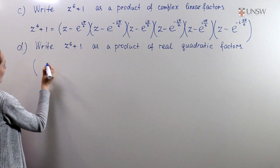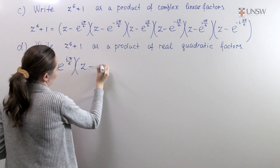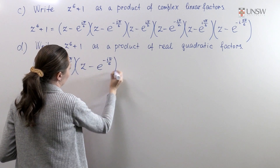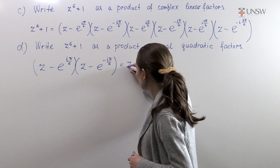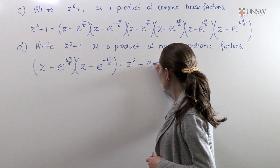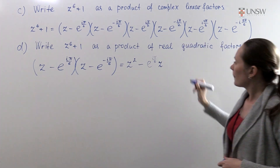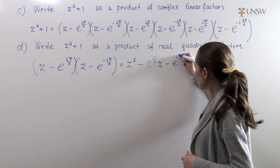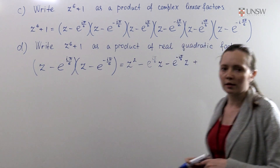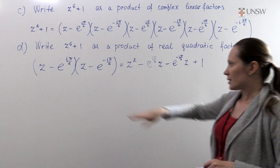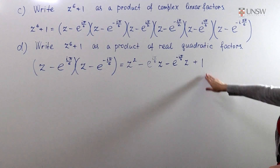Let's calculate the first one using standard rules. It will be z squared, minus e to the iπ/6 times z, minus e to the minus iπ/6 times z, and plus e to the iπ/6 times e to the minus iπ/6, which gives us 1, because multiplying these we sum the powers and the power will be 0, so e to the power 0 equals 1.